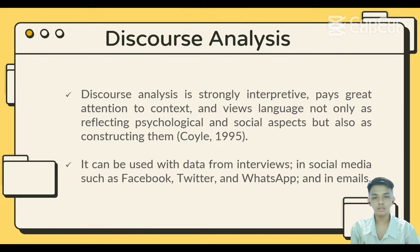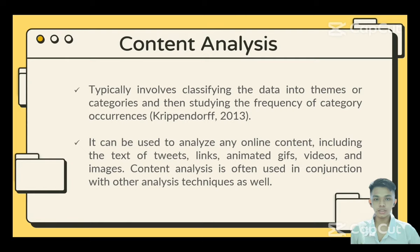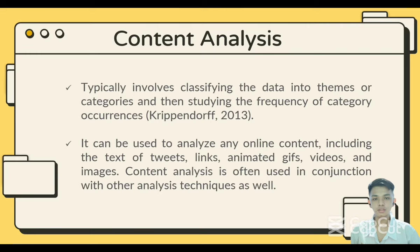It can be used with data from interviews and social media such as Facebook, Twitter, and WhatsApp, even emails. Content analysis typically involves classifying data into themes or categories and then studying the frequency of category references, based on Clip and Dorp in 2013. The technique can be used for any text — where text refers to a range of media including video, newspapers, advertisements, service responses, images, and sounds. It can also be used to analyze online content including text, clips, links, animated GIFs, videos, and images. Content analysis is often used in conjunction with other analysis techniques.